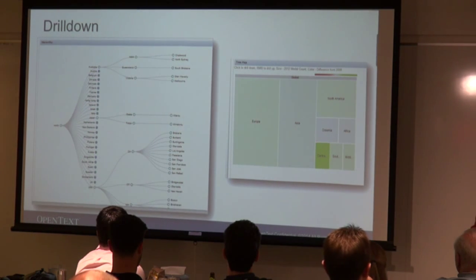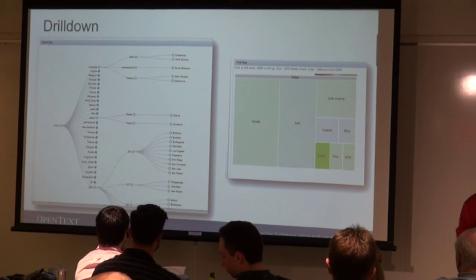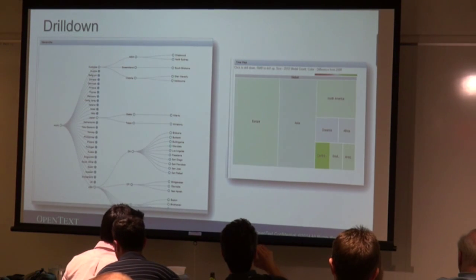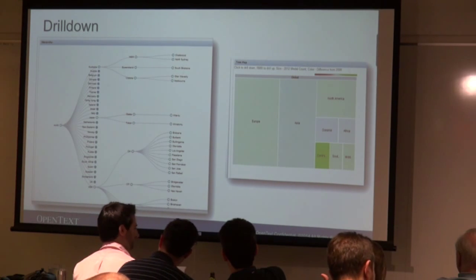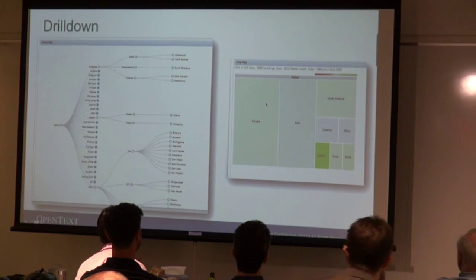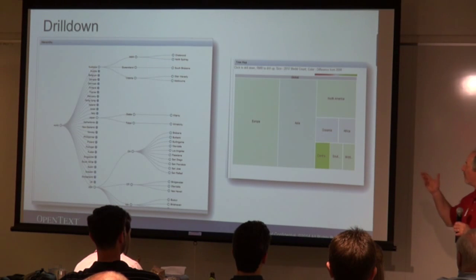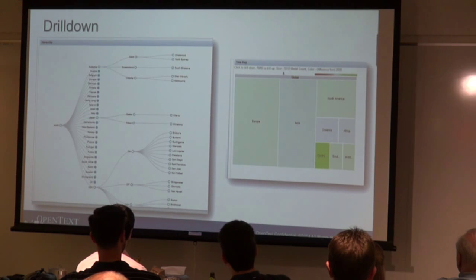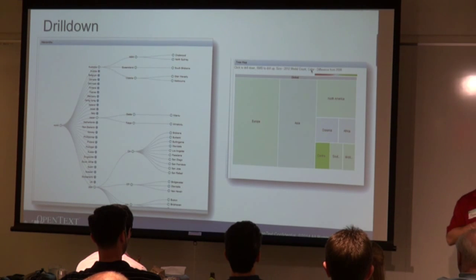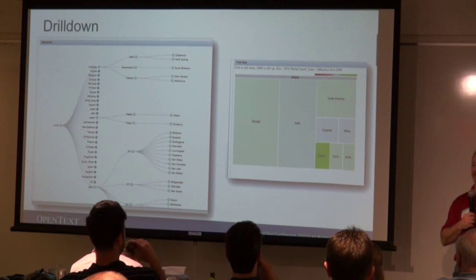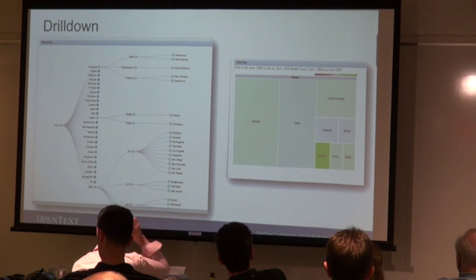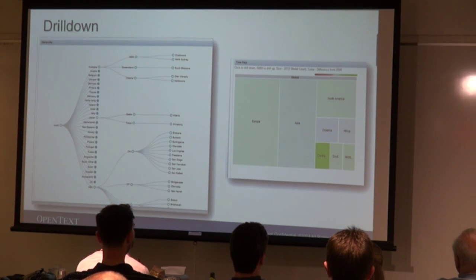Drill down is a different way of displaying large amounts of data. Drill down is like a tree structure where you can drill down into more detail. A tree map is a chart with multiple dimensions — the color is one thing and the size is another. In this case, the size is the 2012 Olympics medal count and the color is the growth or lack thereof from the previous Olympics. Drilling down on Europe goes into countries; drilling down into a country goes into the different athletics.